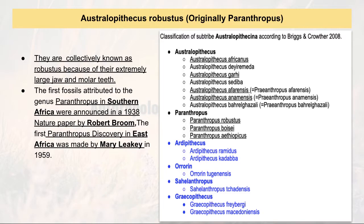Just for background, Paranthropus is the first fossil found in Southern Africa, discovered by Robert Broom in 1938, and in Eastern Africa Paranthropus was found by Mary Leakey in 1959. If we talk about the robustus and gracile forms, the gracile form is lighter and their teeth are small compared to robustus. The robustus are known for large jaws and large molar teeth — this is a major difference between the gracile and robustus forms.